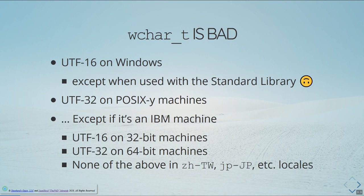We also know that `wchar_t` is bad and is a real dead end. It's UTF-16 on Windows, except when you use it with the standard library, in which case it will cut your surrogate pairs in half or ignore them entirely. You end up with something closer to the 1990s UCS-2, where 16-bit was the maximum — if you have more than 16 bits, it just says we don't need that. It gets mangled. We have UTF-32 on POSIX machines, which is nice, except if it's an IBM machine. Then you get UTF-16 on 32-bit machines, UTF-32 on 64-bit machines, and none of the above if you're on a Chinese or Japanese-based locale on any of those machines.